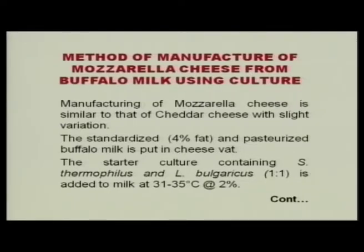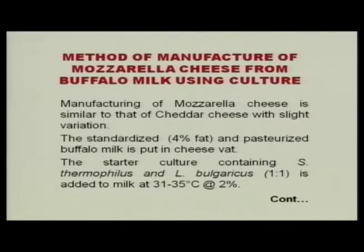The method of manufacture is similar to cheddar cheese but with slight variations. First, milk is standardized to 4% fat and pasteurized buffalo milk is used. The casein to fat ratio is very important and should be around 0.7. If the casein is high there will be problems, but if the fat is less you will not get the desirable mellowness and nutty flavor required in the product. The fat should be 4%; if fat is more then losses could be more.